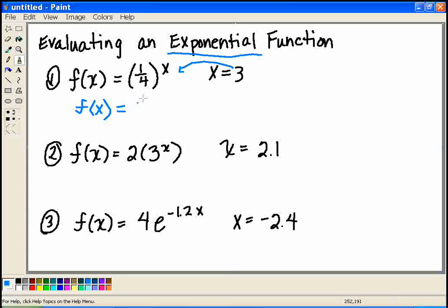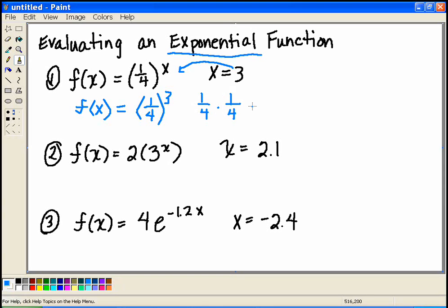So in this first case, this becomes 1/4 raised to the third power. And now we know that equals 1/4 times 1/4 times 1/4. Or we could just write this 1 over 64.